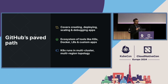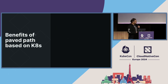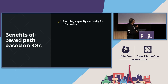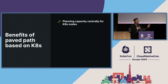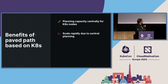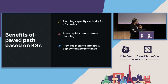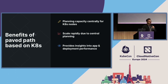Why a paved path? With our paved path based on Kubernetes, we are able to plan a lot of capacity centrally across all services, since smaller and larger workloads exist on the same machines. Capacity planning has moved centrally for us, and because of that we are able to scale rapidly as needed. We are also able to consistently provide insights into app and deployment performance to service owners — almost at the level of what a specific port or container is doing.